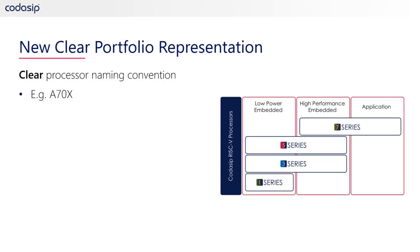If you reference the chart on the right, we have restructured our portfolio to include RISC-V microprocessors targeted for low-power embedded applications, high-performance embedded applications, and application-level processors capable of running an operating system. In addition, we have changed the BK naming nomenclature to L for low-power, H for high-performance, and A for application-level processors.